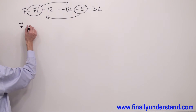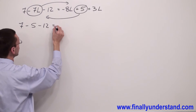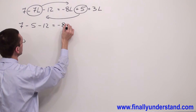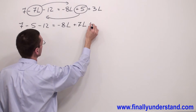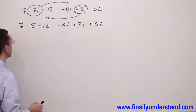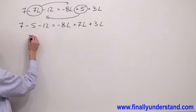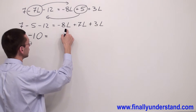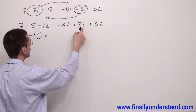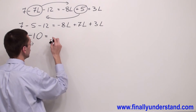So I'm going to have 7 minus 5 minus 12 equals negative 8l plus 7l plus 3l. Simplifying: 7 minus 5 is 2, and 2 minus 12 equals negative 10. On the right side: negative 8l plus 7l equals negative 1l, and negative 1l plus 3l equals 2l.